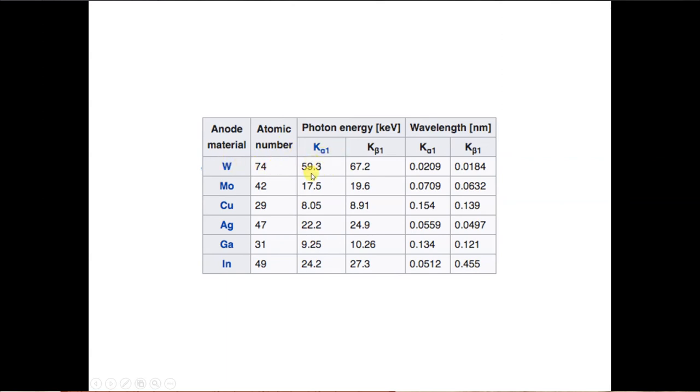You see 74 that is tungsten produces photons of about 59.3 kiloelectron volt. Whereas, something like copper which has an atomic number of 29 produces just about 8.05 kiloelectron volts of energy. As you can see higher the atomic number, more is the energy of the X-rays that are produced.